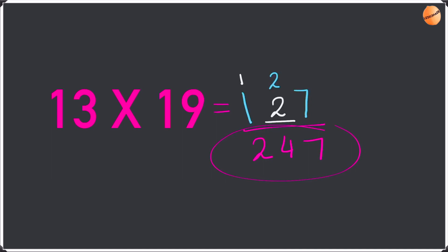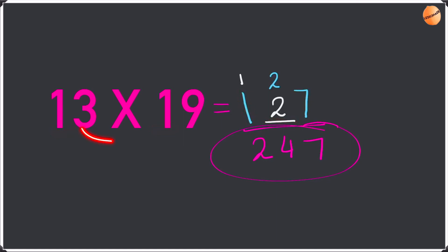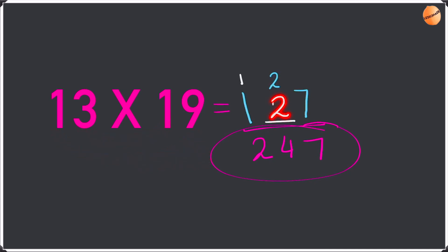Let me explain this question once again. Firstly we multiply the second digit of both numbers — 3 times 9 is 27, so we write the 7 and take the 2 as remainder. Then we multiply the first digit of both numbers — 1 times 1 is 1. Then we write a dash in the middle and multiply the numbers like this: 3 times 1 plus 1 times 9, which is 3 plus 9 equals 12.